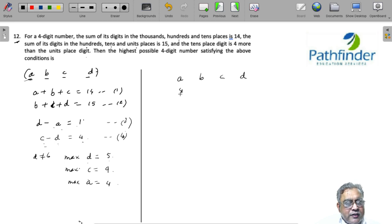All we need to do is find b. The sum of a, b, c must be 14. So 4 plus 9 is 13, so b must be 1. 4 plus 9 plus 1 is 14, and 1 plus 9 plus 5 is 15. It satisfies both conditions.